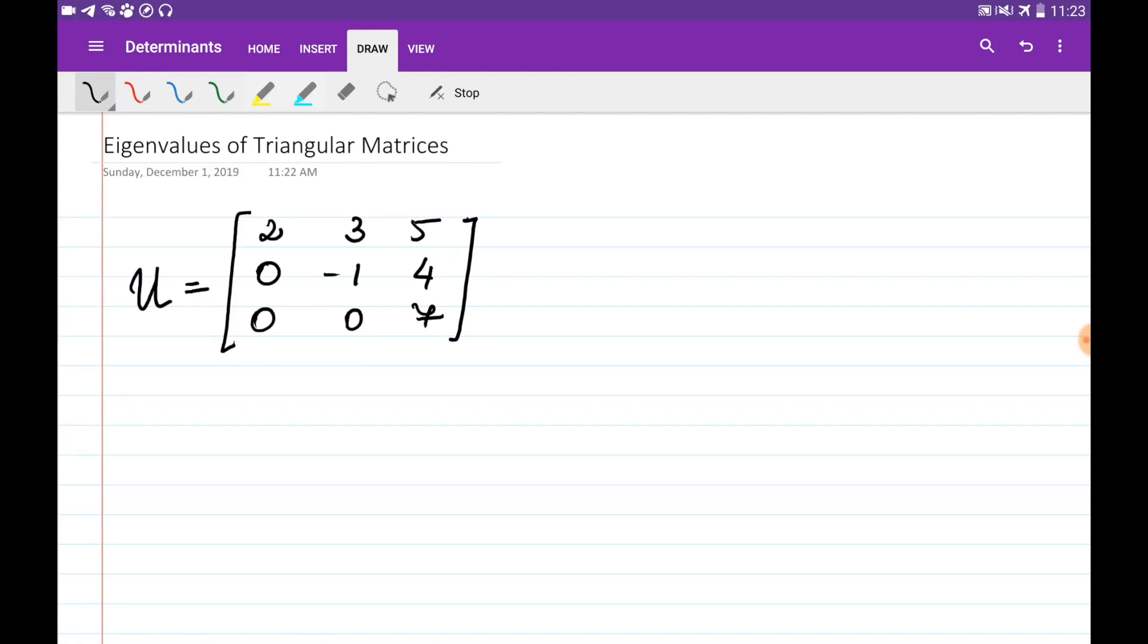When we need to find the three eigenvalues of a 3 by 3 matrix, we need to find the roots of a cubic equation, or we can use some properties of the matrices. Let's say we're given a triangular matrix.